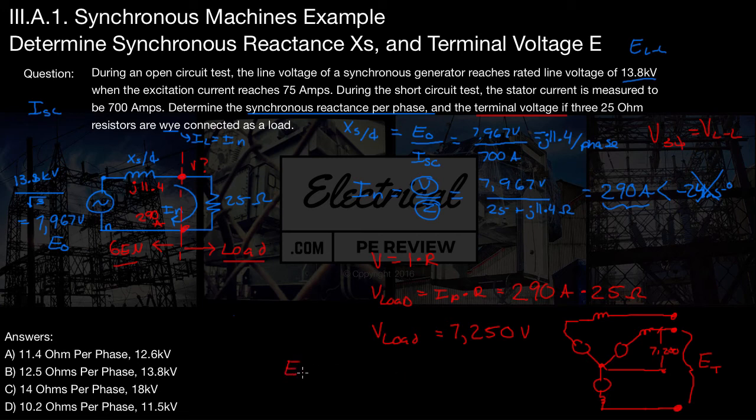So we've got terminal voltage ET is going to equal square root 3 times our single-phase load voltage. So that's going to equal square root 3 times 7,250 volts. And we come up with a final answer of terminal voltage equals 12.6 kV.